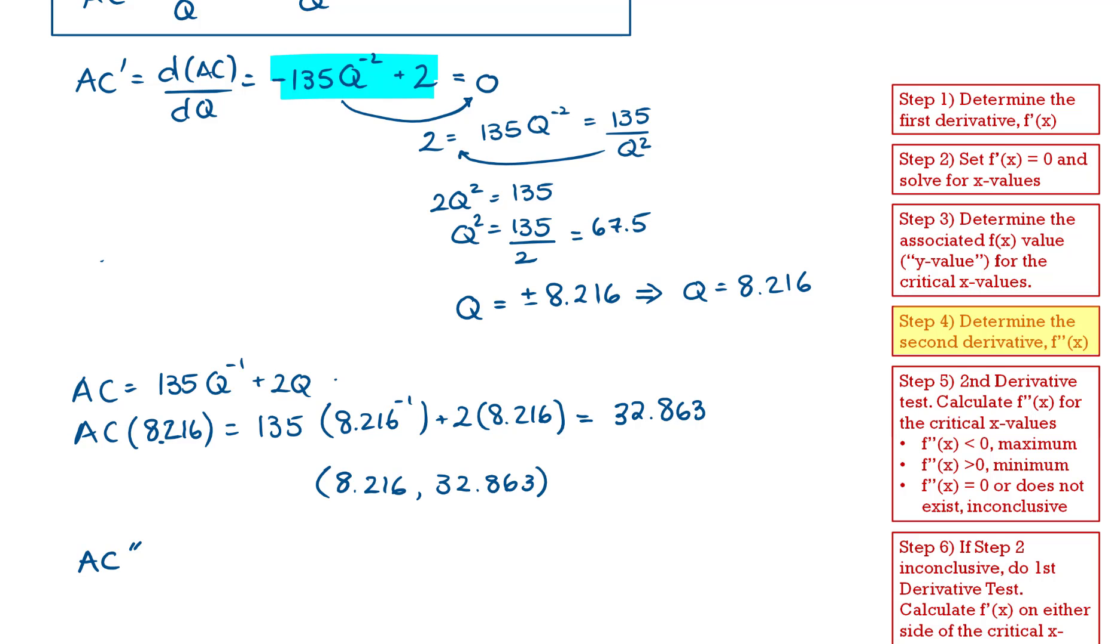So the derivative of negative 135 Q to the power of negative 2 is going to be positive 270 Q to the power of negative 3. And the derivative of 2 is simply 0. So this is our derivative.